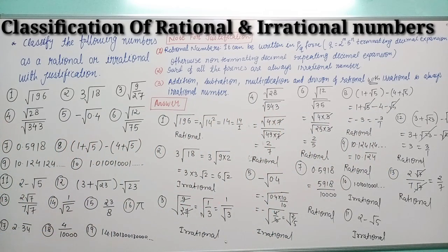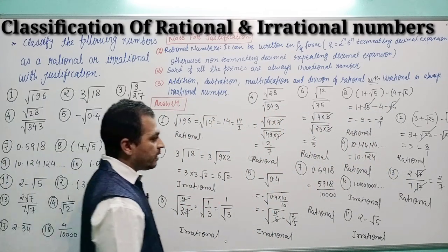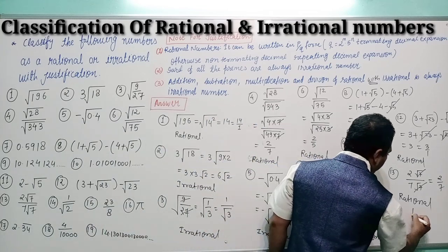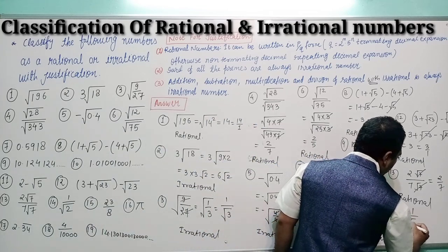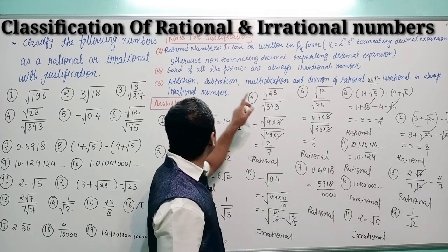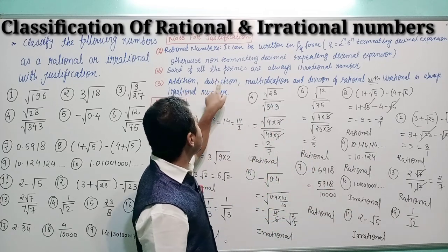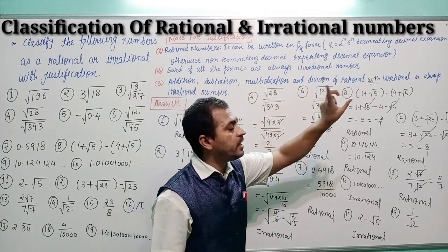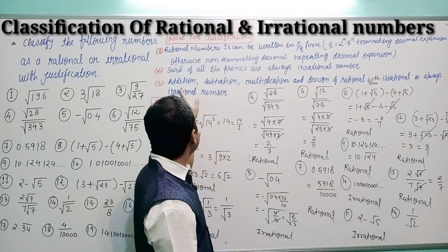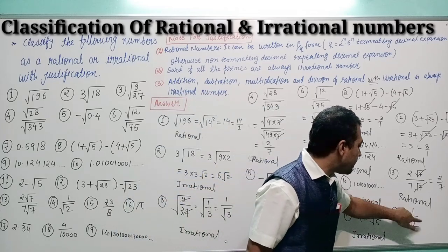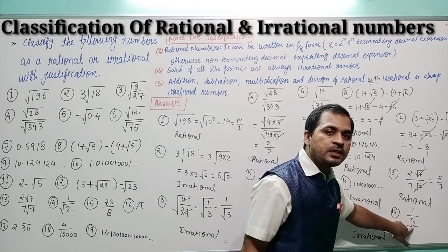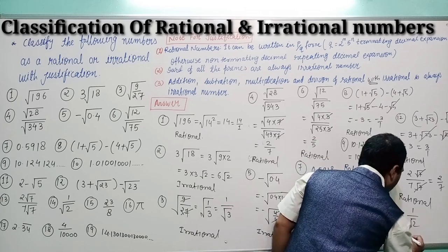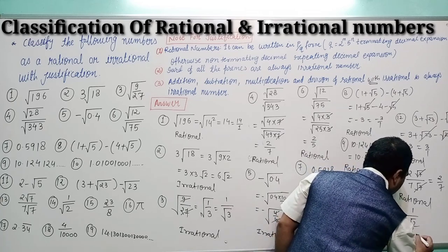Question number 14: 1/√2. As per point number 3, division of a rational number with an irrational number is always irrational. Here 1 is rational and √2 is irrational, so this is also irrational.